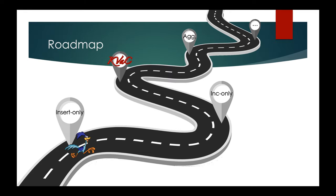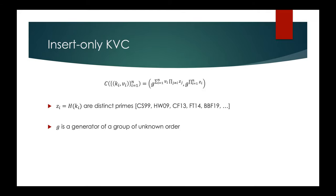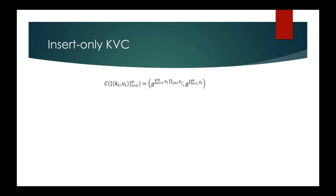Let's begin with the insert-only key value commitment. We're going to be working in groups of unknown order, so G is a generator for a group of unknown order. The key value commitment takes the form presented at the top of the slide. The key value map committed to corresponds to tuples of the form (k_i, v_i), and the values z_i are just distinct primes corresponding to the keys k_i. Presented this way, the key value commitment simply has in it a group description, a hash description, and just two group elements.